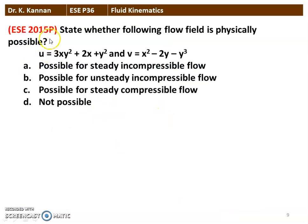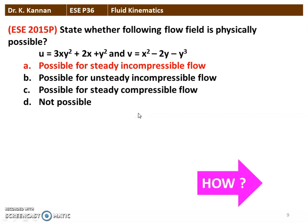The next question from the 2015 question paper: state whether the following flow field is physically possible — U = 3XY² + 2X + Y² and V = X² - 2Y - Y³. The options are: possible for steady incompressible flow, possible for unsteady compressible flow, possible for steady compressible flow, or not possible. The correct answer is it is possible for steady incompressible flow. We will see how in the next slide.